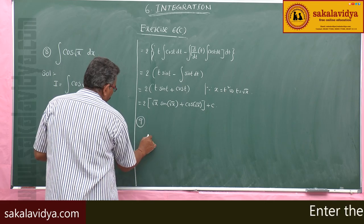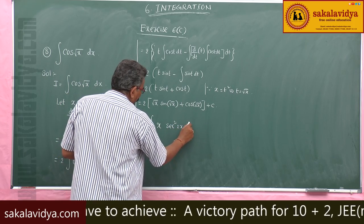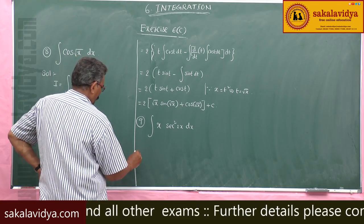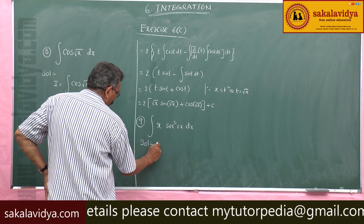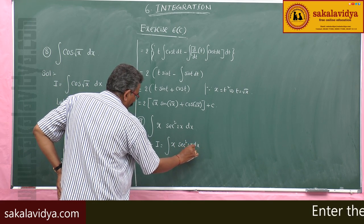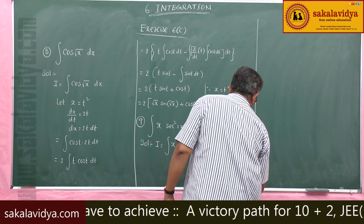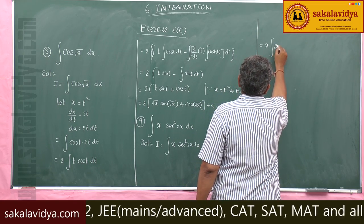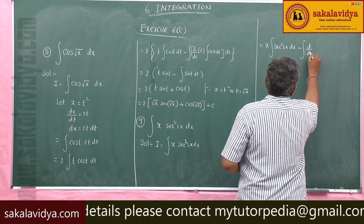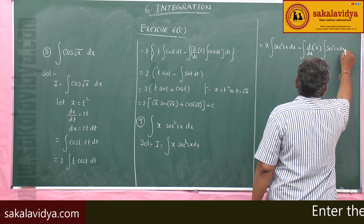Problem 9: integral of x·sec²(2x) dx. Let I = integral of x·sec²(2x) dx. Here x is the first function and sec²(2x) is the second function. Applying integration by parts: x · integral of sec²(2x) dx − integral of [d/dx of x · integral of sec²(2x) dx] dx.